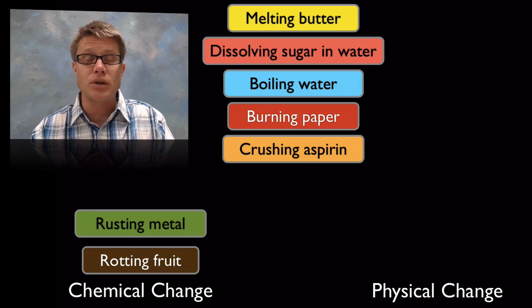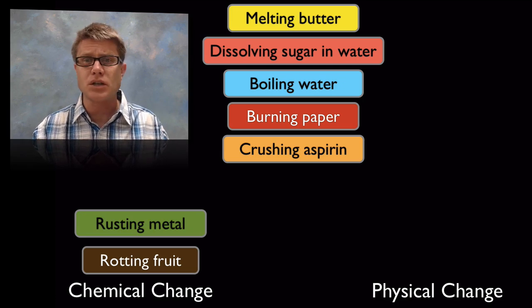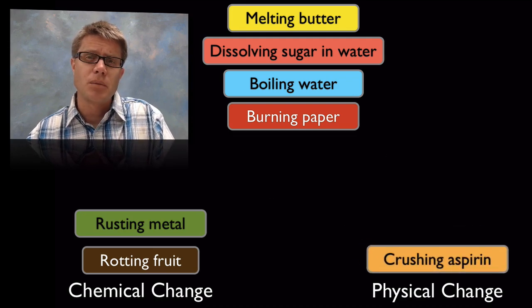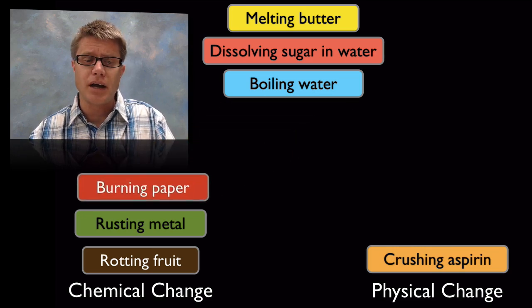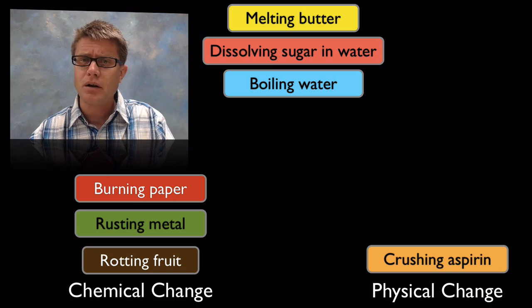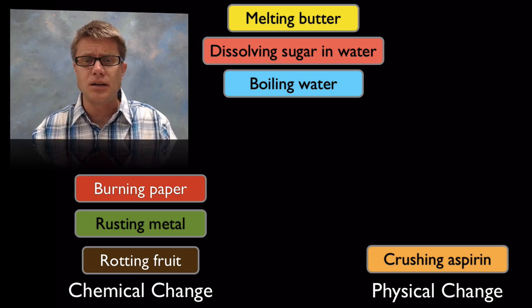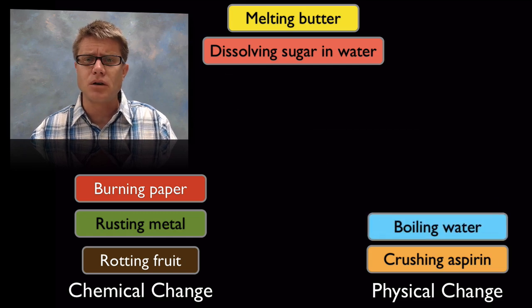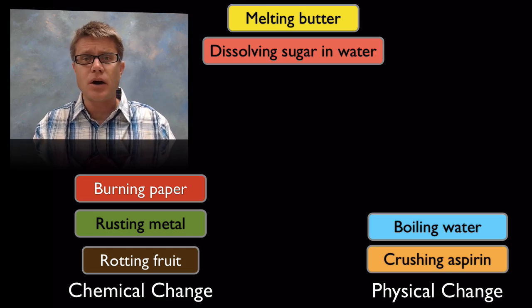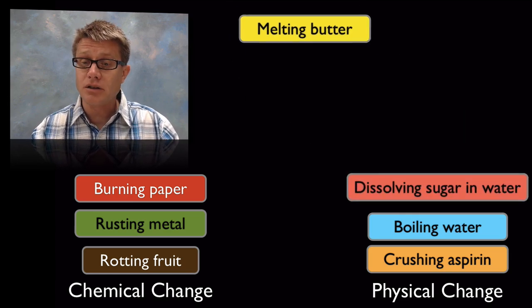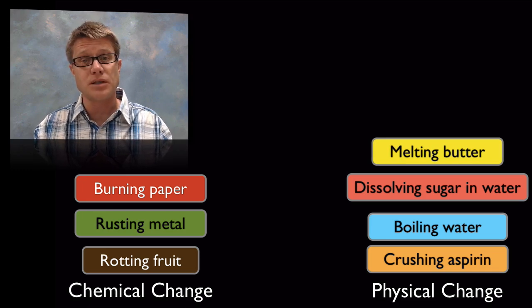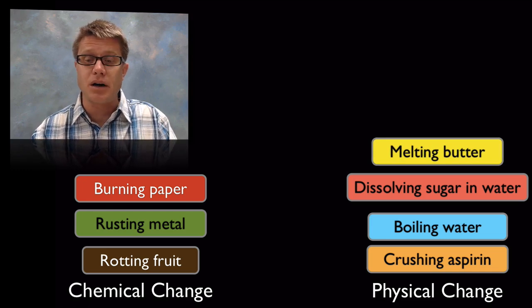What if we take a pill of aspirin and crush it up — is that chemical or physical? Well, there's no change in color, heat, or odor, and no gas being produced, so that's a physical change. What about burning paper? We're combining it with oxygen, it would be hard to go back to paper, so that's a chemical change. What about boiling water? We're adding heat to it, but the reaction is not generating heat, so we'd call that a physical change. What about dissolving sugar in water? It's still sugar inside the water — we've simply separated the sugar molecules — so that's a physical change. What about melting butter? That's also a physical change; it's still butter, just in a liquid form. If we were to burn it, it's combining with oxygen, so we'd call that a chemical change.